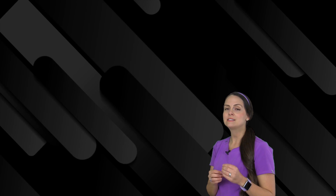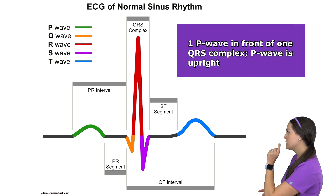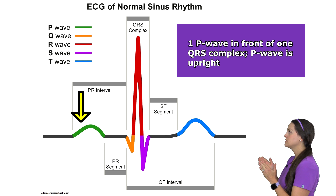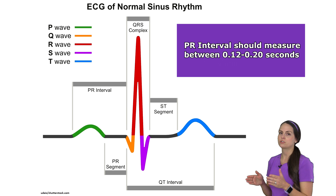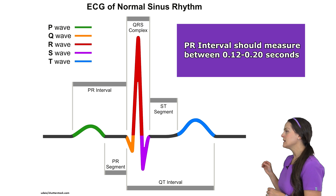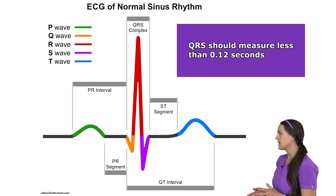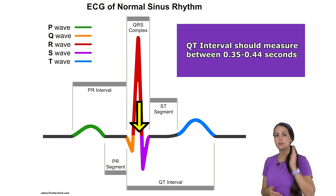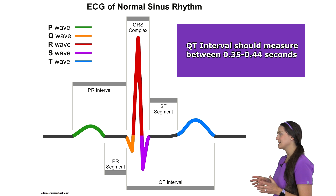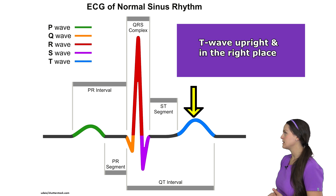What you want to take away from this is how the ECG waveform should look and what certain parts should measure. You want one upright P wave in front of every QRS complex. The PR interval, from the beginning of the P wave to the beginning of the QRS complex, should measure 0.12 to 0.20 seconds — this represents the AV node's conduction delay. The QRS complex should measure less than 0.12 seconds. The QT interval, from the beginning of the QRS to the end of the T wave, measures 0.35 to 0.44 seconds, varying by gender and heart rate. The T wave should be upright.